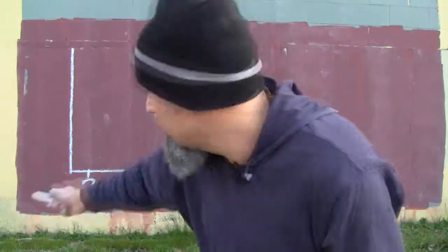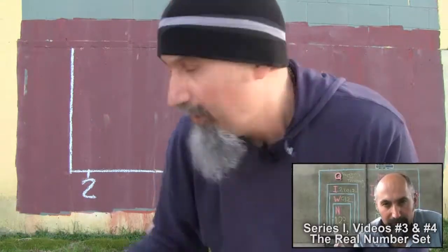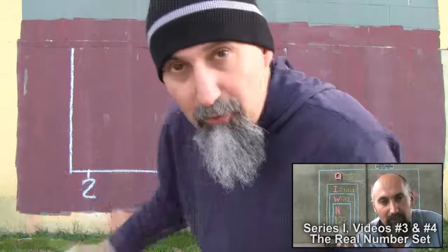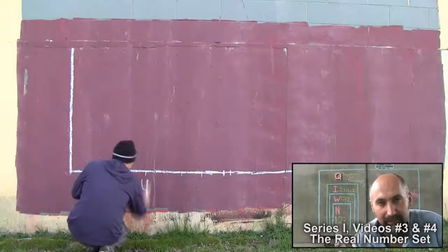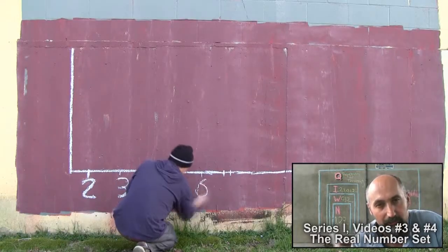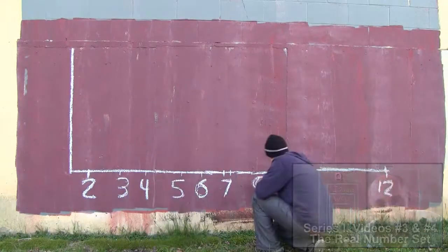The lowest number you can get is a two and the highest is a 12. In between are the counting numbers: three, four, five, six, seven, eight, nine, ten, eleven, twelve.